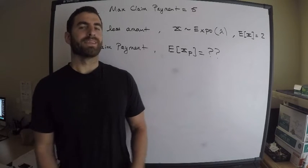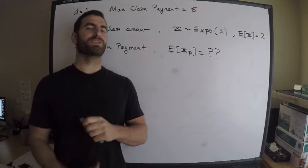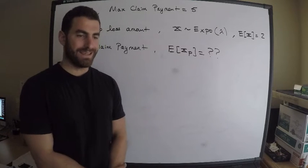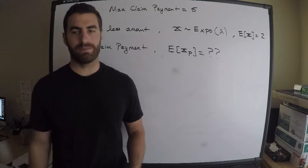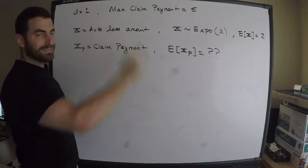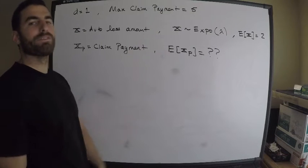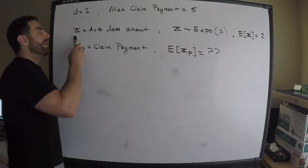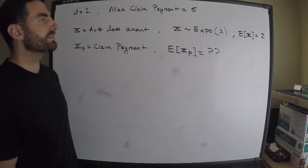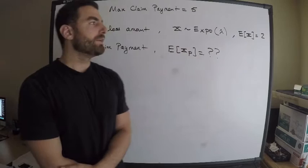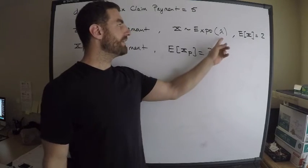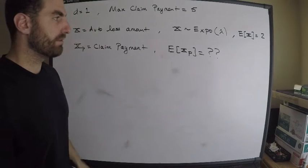Welcome to Manson Noise Map Lab, thank you for subscribing. This is a requested video covering a question from Exam P. Here are the preliminary details: we have a deductible of one, a max claim payment of five — so as the insurance company we're not paying more than five. We're interested in auto losses, so my random variable X is auto losses, distributed exponentially, with expected value of two.